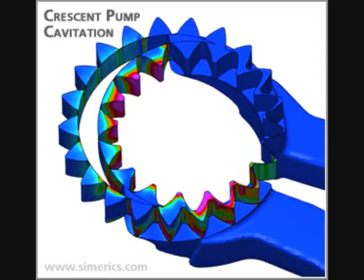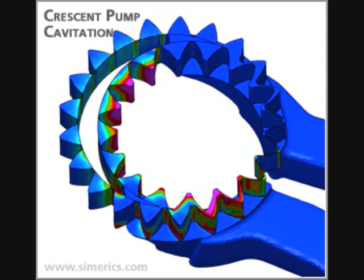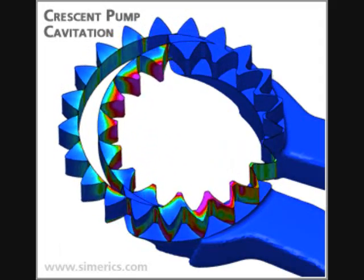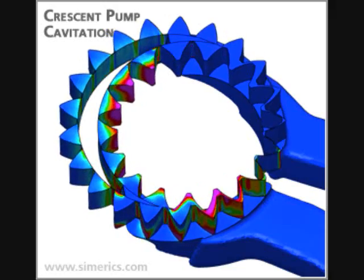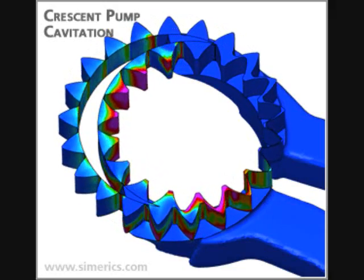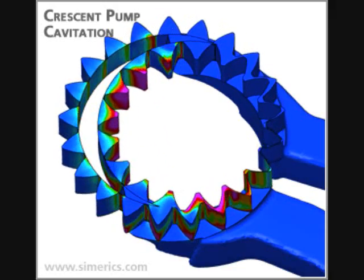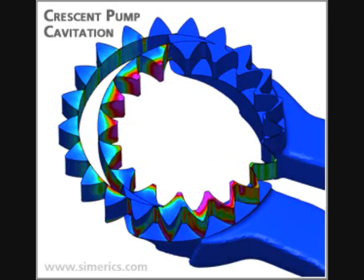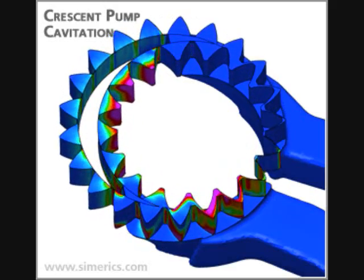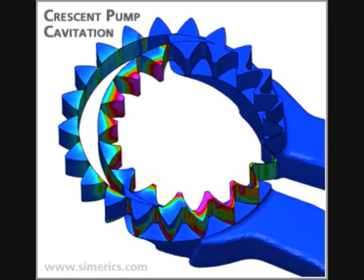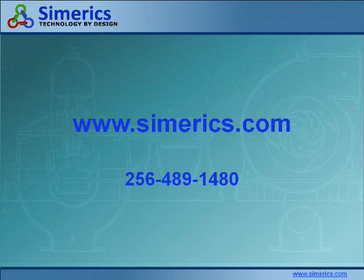In the simulation presented here, the aeration and cavitation in the crescent pump is indicated by the magenta areas in the surface plots. These pockets of aeration and cavitation can have a significant impact on performance, damage, and noise. Pumplinks provides an effective tool for evaluating these effects and improving the design.